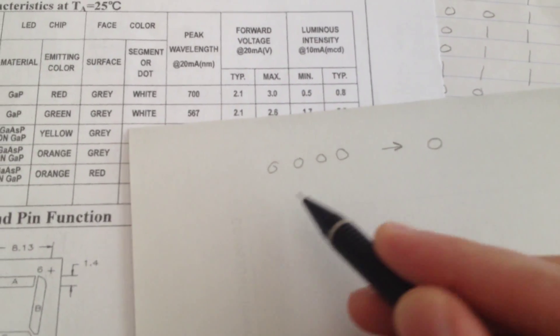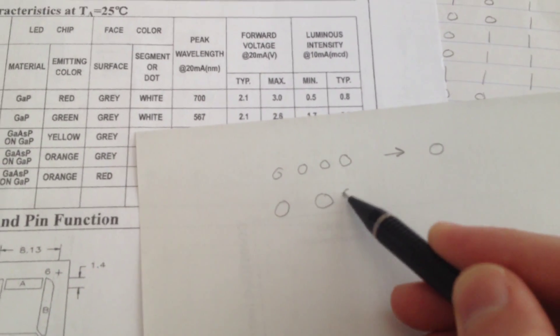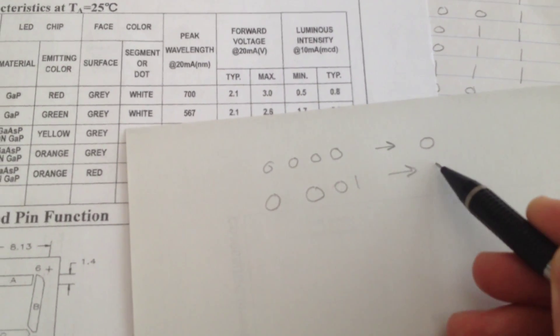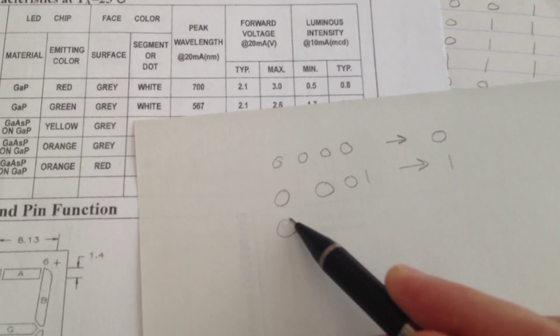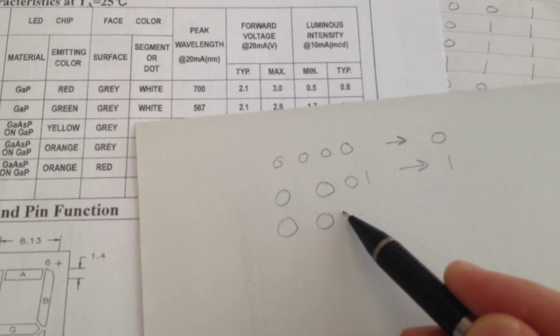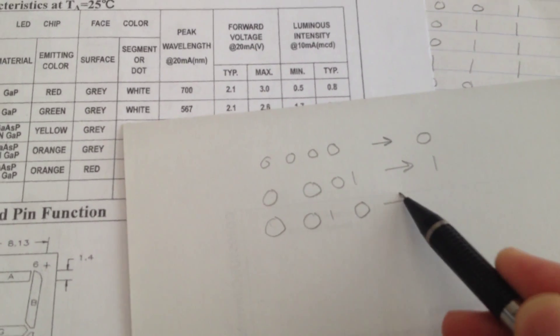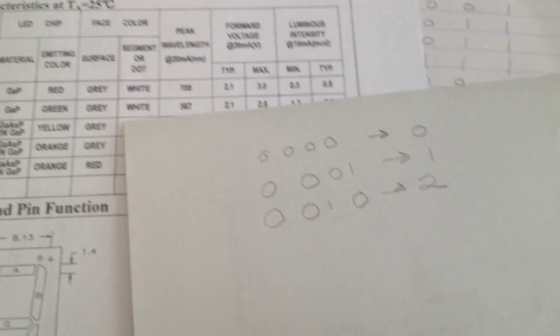And with each one, what you need to do is somehow make this representation displayed on the seven segment that I was talking about so that you get a decimal number.